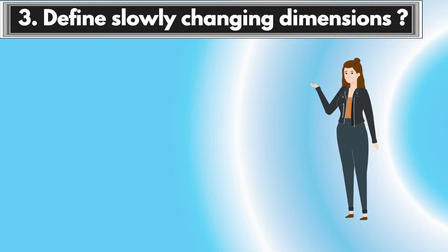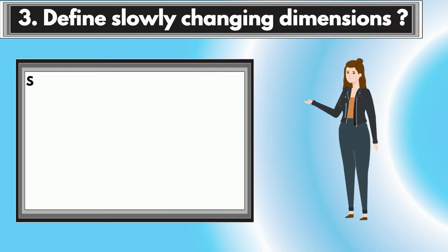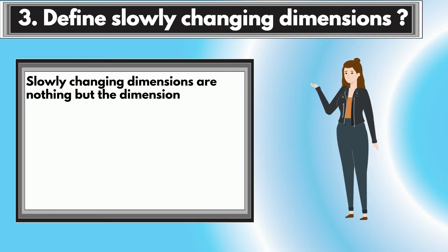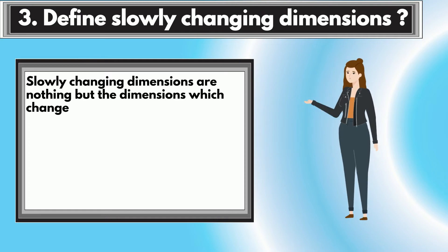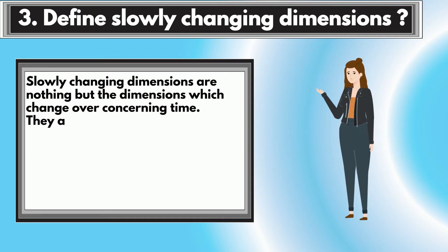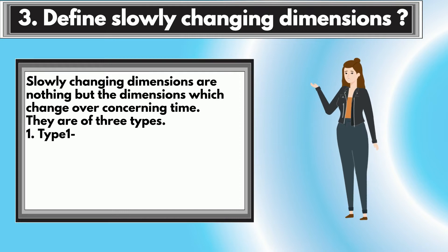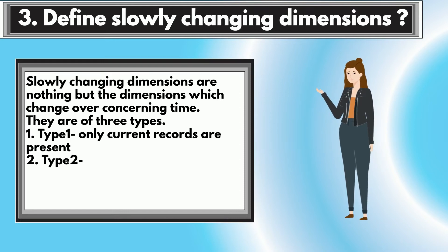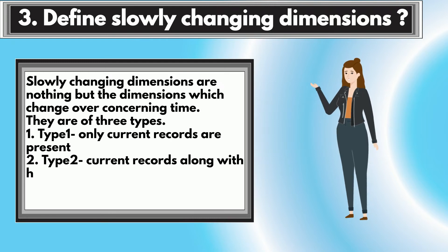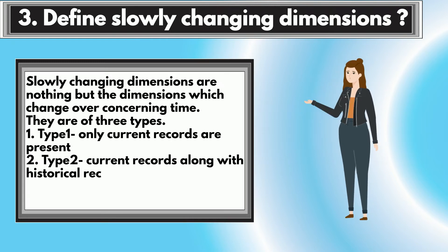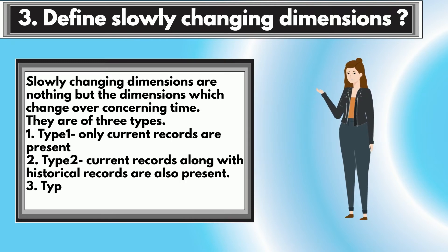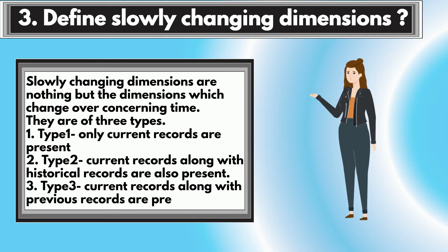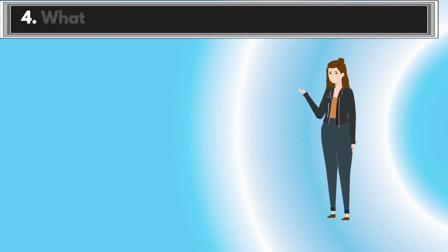Question 3: Define Slowly Changing Dimensions. Slowly Changing Dimensions are the dimensions which change over time. They are of three types: Type 1, where only current records are present; Type 2, where current records along with historical records are also present; and Type 3, where current records along with previous records are present.